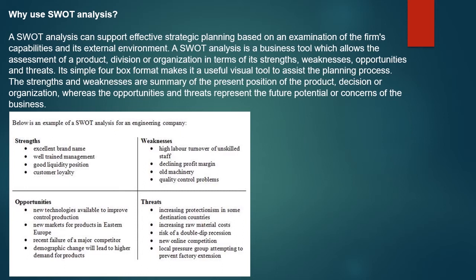The strength and weakness are a summary of the present position of the product or organization, whereas the opportunities and threats represent future potential or context of the business. So we do the SWOT analysis to find out the present position of your business — where your company is today and what is the market position outside of your company. It can be put in a simple visual tool using the four-box format of strength, weakness, opportunity, and threat. You can see this diagram of a SWOT analysis of an engineering company.